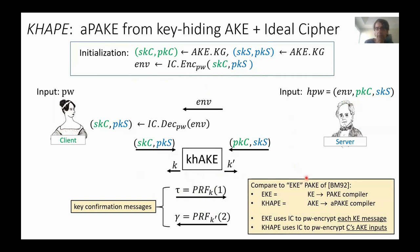It's interesting to compare this compiler to the classic encrypted key exchange of Bellovin and Merritt. Both protocols use an ideal cipher to encrypt group elements and compile some form of key exchange into PAKE. But EKE compiles plain key exchange into a symmetric PAKE, while we compile authenticated key exchange into an asymmetric PAKE. EKE uses the ideal cipher to password-encrypt every message of the key exchange, whereas we ideal-cipher encrypt under a password only the inputs of the client in the authenticated key exchange.